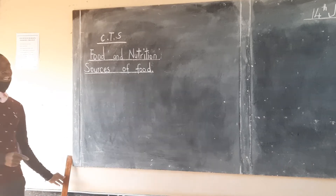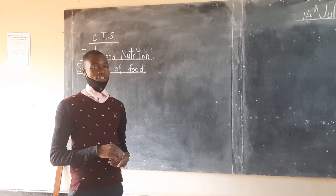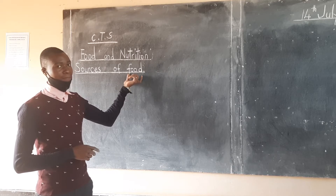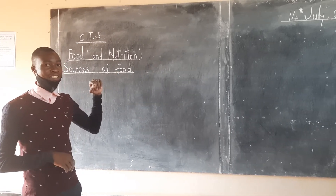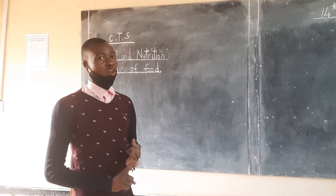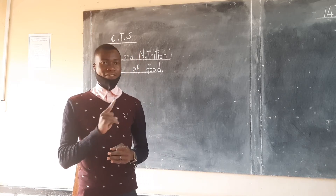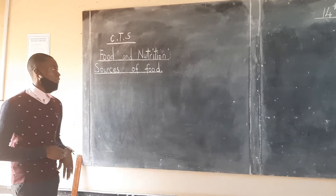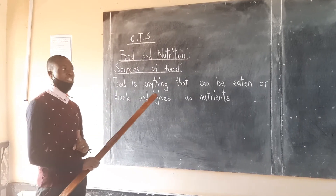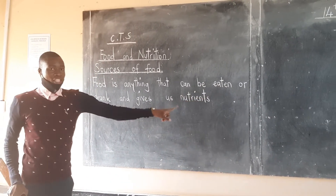I want us to look at the two sources of food. But first, what is food? In simple terms, we can say food is anything that can be eaten or drunk and gives us nutrients. Let's write that definition on the board. Food is anything that can be eaten or drunk and gives us nutrients.